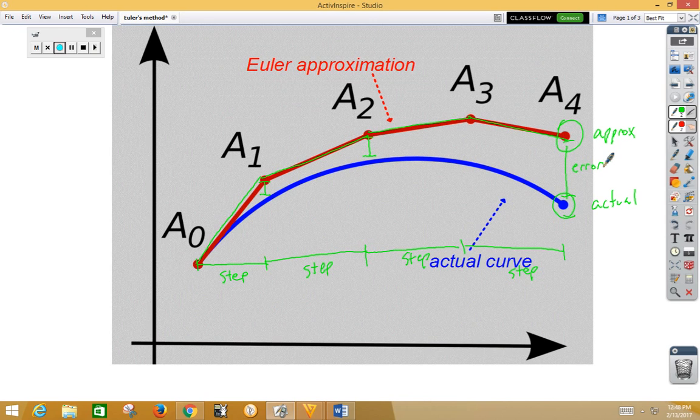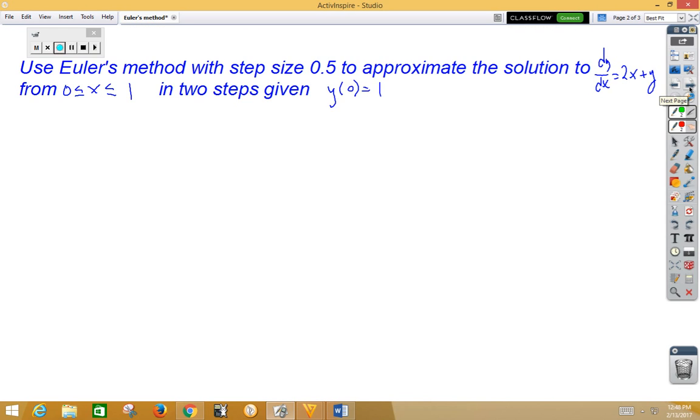So anyway, let's do one of these. We're going to use Euler's method with step size 0.5 to approximate the solution to dy/dx = 2x + y from 0 to 1 using two steps starting at (0,1). Now we only use two steps not because we're lazy, it's because AP generally only does two steps. Obviously, more steps would make a more accurate answer.